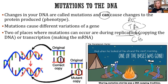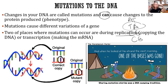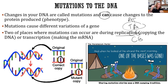Mutations also happen during transcription — when you have your original DNA and you're making the mRNA, sometimes when you copy it, it doesn't work out. Think of times you did it in class and couldn't find a match — you made a mistake copying it. Our body does that too, and that causes variations in the DNA which can affect the proteins.